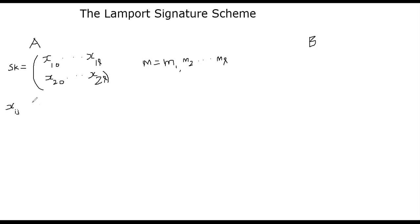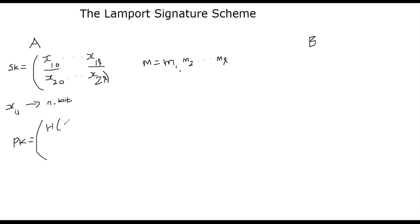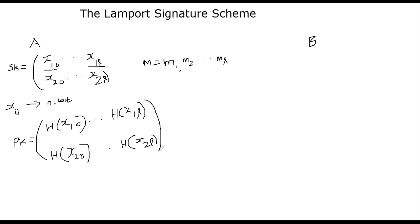Each Xij is an N-bit number, and you have to fix N up front. So far I've only defined the secret key. What about the public key? The public key, denoted PK, is nothing but taking each component of your private key and computing the hash function of it. So PK is just the hash of the corresponding private key values — X10, etc. SK is the private key, and PK is the public key.